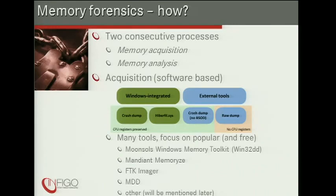How do we do memory forensics? It has two consecutive processes. First is memory acquisition — collecting the memory image. From a software perspective, this can be done using a third-party tool or Windows-integrated methods. Windows-integrated methods include reading the hibernation file, which contains forensically interesting data used for booting from hibernate state.